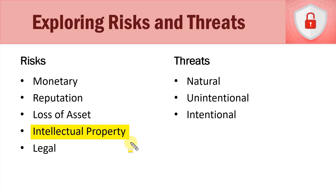With a lot of these different types of risks, there's going to be a legal concern or legal risk associated with them. Did we break any laws as a business? Are we liable for anything? Are we going to get sued? That's going to cost us money. So there's a legal risk associated with that as well. Those are the high-level categories of risk.